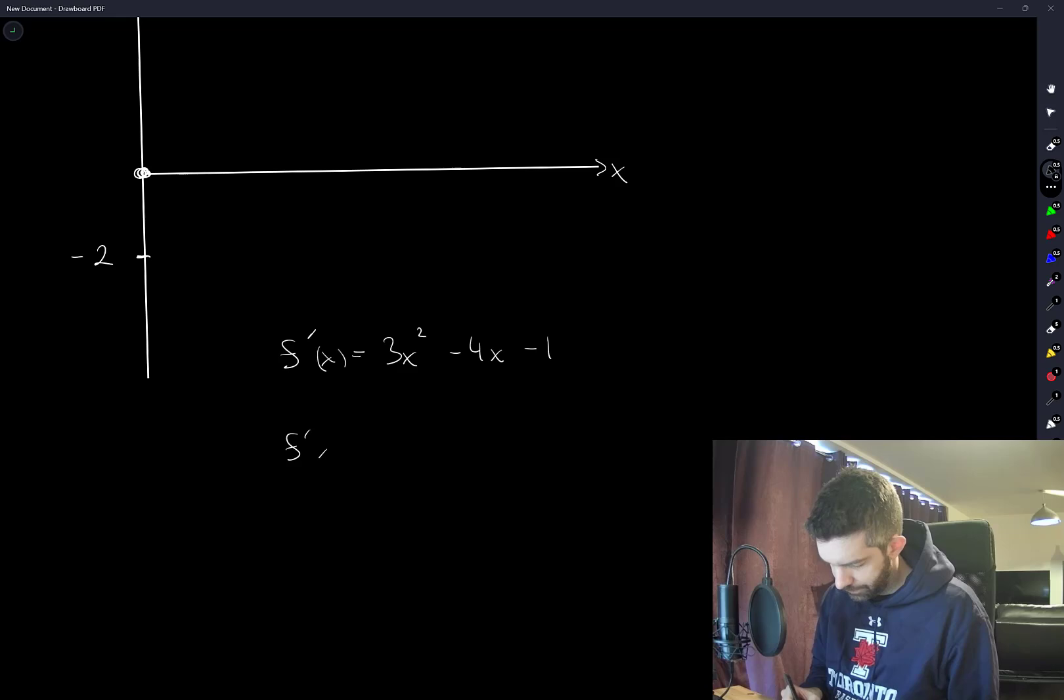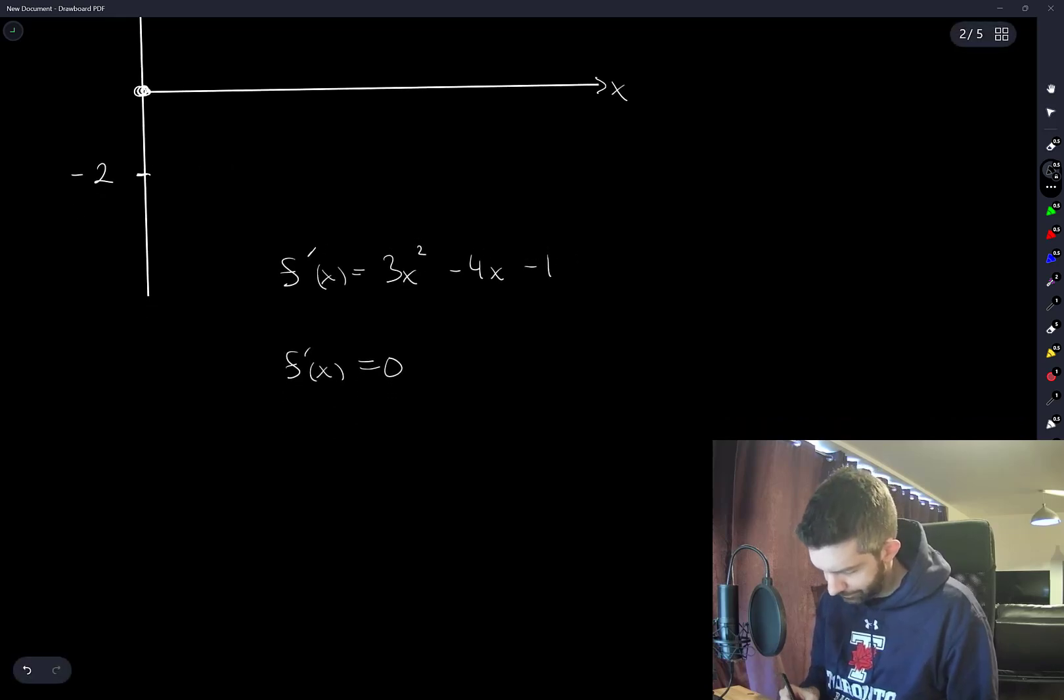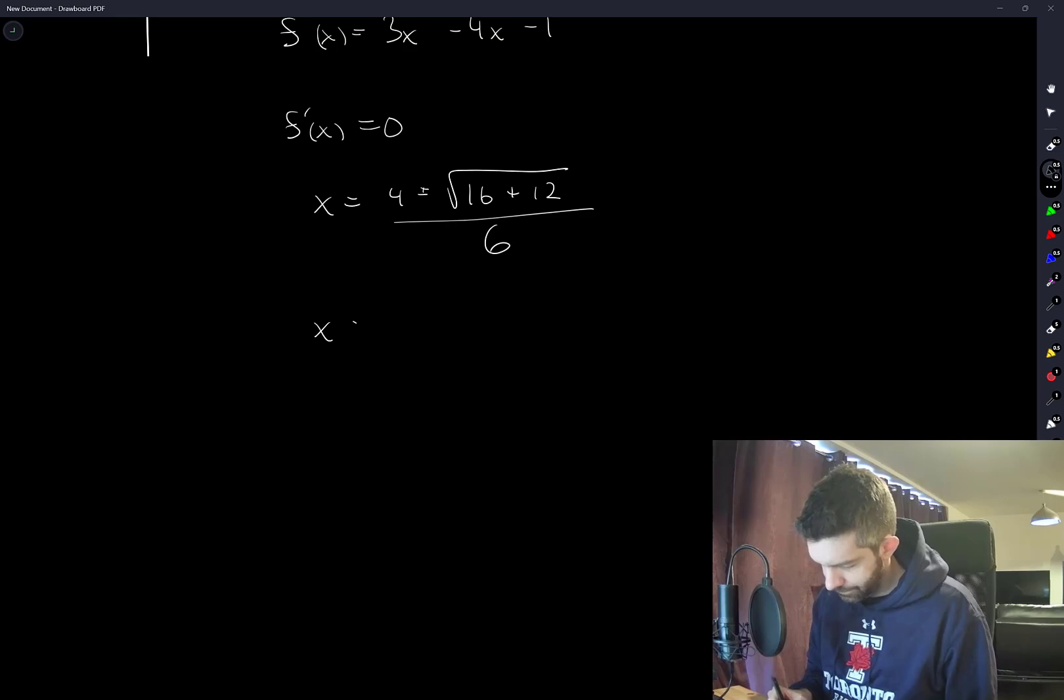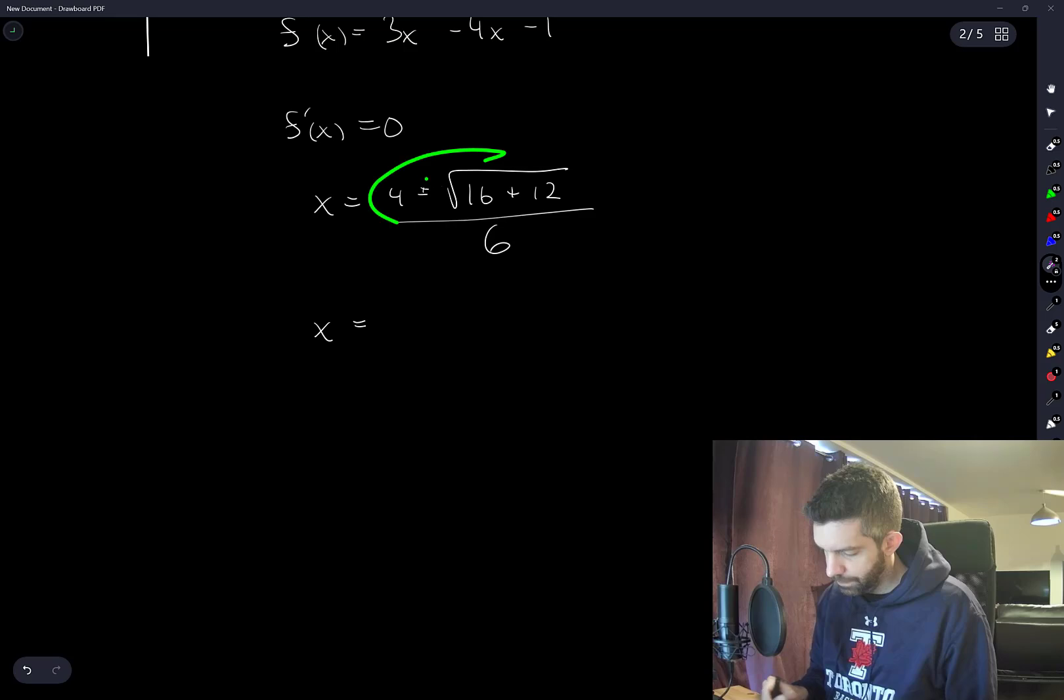So f'(x) equals 0 gives us that x is equal to 4 plus the square root of 16 plus 12 divided by 6. If we take the negative sign, then this will be negative, so we don't need the negative sign.